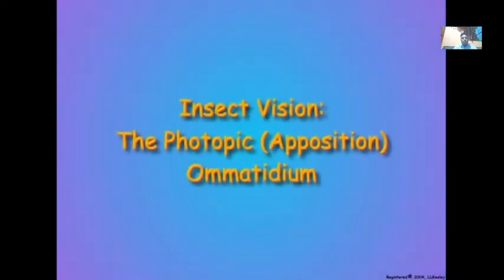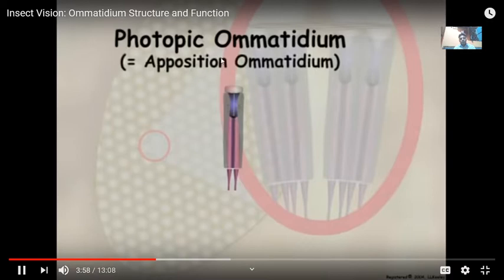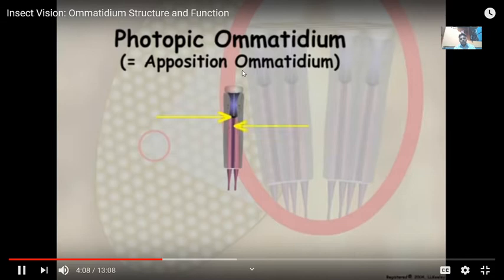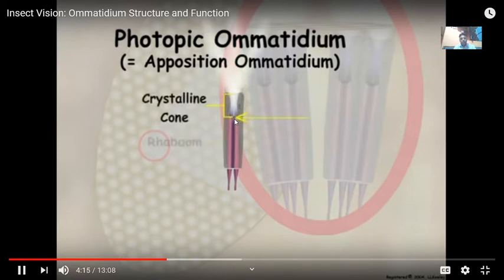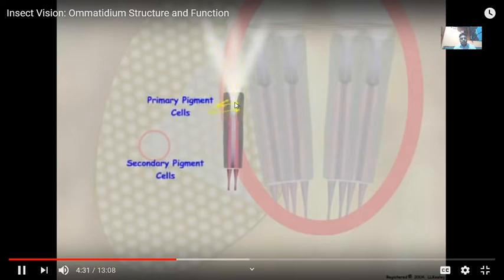Insect species that are active during the daytime when light is abundant have photopic ommatidia in their compound eyes. The photopic ommatidium was earlier called an apposition ommatidium because the base of the crystalline cone is in direct contact, or in apposition, to the rhabdom. In photopic ommatidia, incoming light is focused on the base of the crystalline cone and directly onto the rhabdom, the light-sensitive sensory region of the retinula cells. Light rays that enter the corneal lens at angles are absorbed by screening pigments located in the cytoplasm of the pigment cells that surround photopic ommatidia.